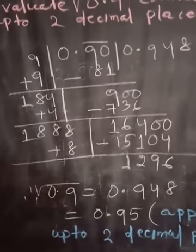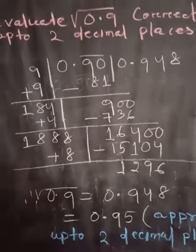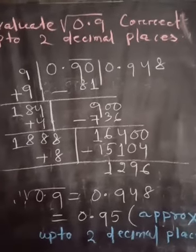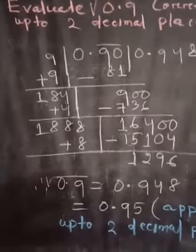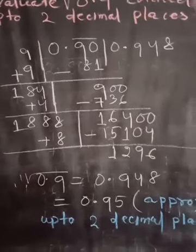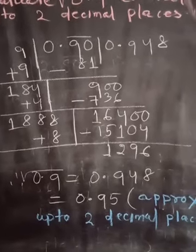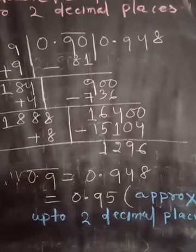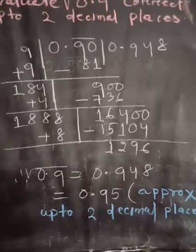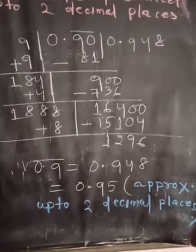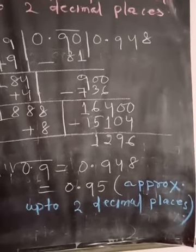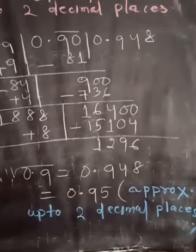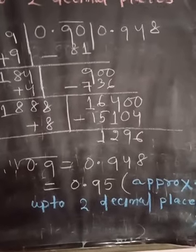Here 9 plus 9 is 18, because you have to write one more 9 below the divisor 9. Now add 9 plus 9 equals 18, and 90 minus 81 equals 9. Put one more pair of digits, one more pair of zeros to the right of 9, it will be 900.